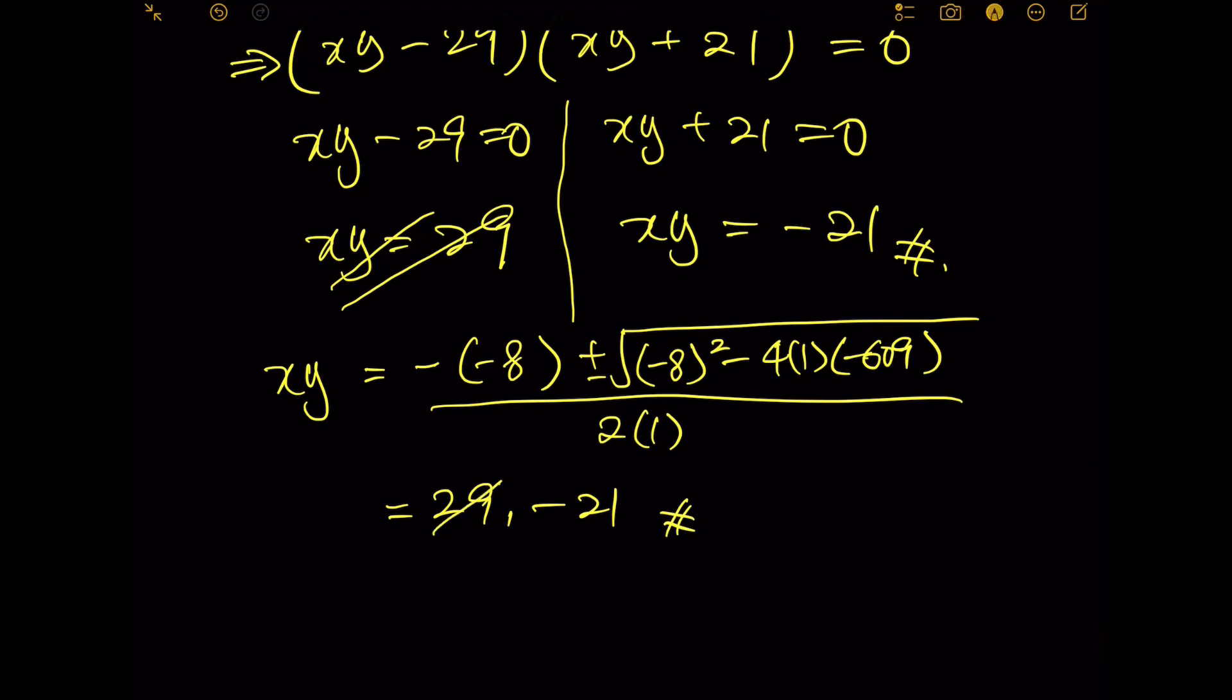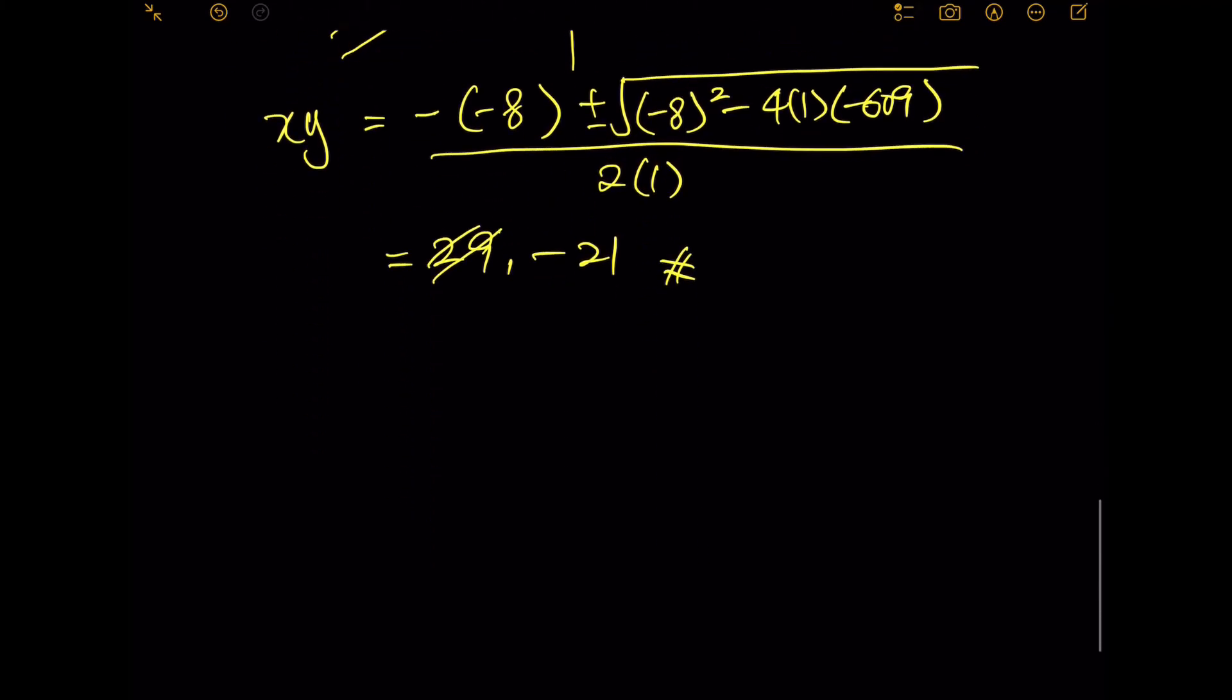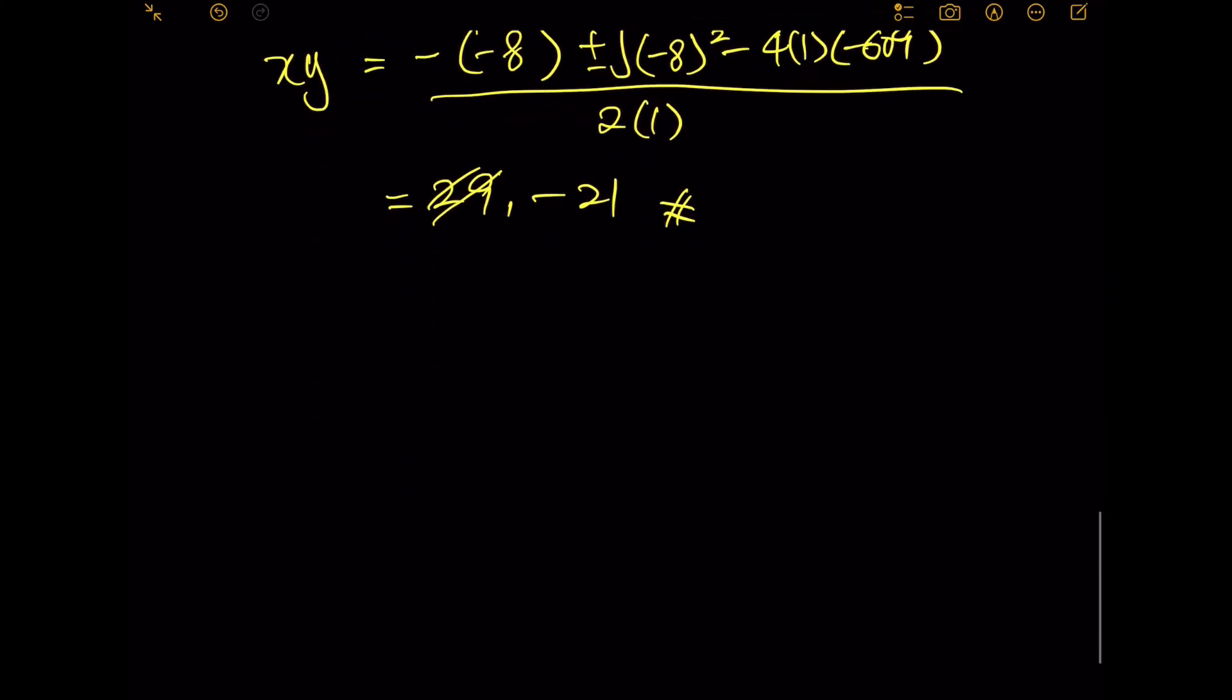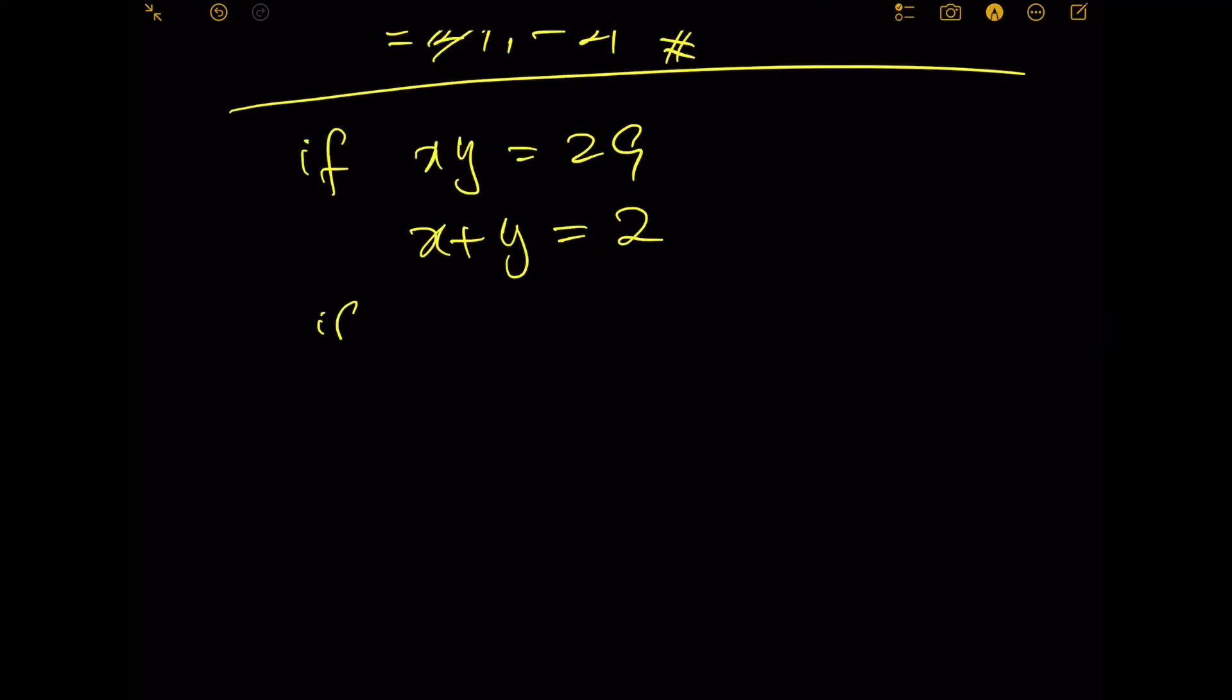Of course, like I said, 29 is not the final answer. I will show you now why 29 is not the final answer. If xy equals 29, and do not forget our equation 1: x plus y equals 2. If both x and y are negative, then x plus y certainly is negative, which cannot equal 2.